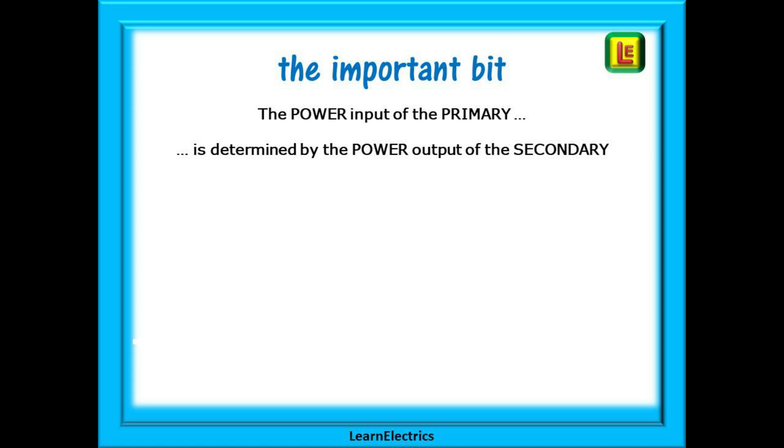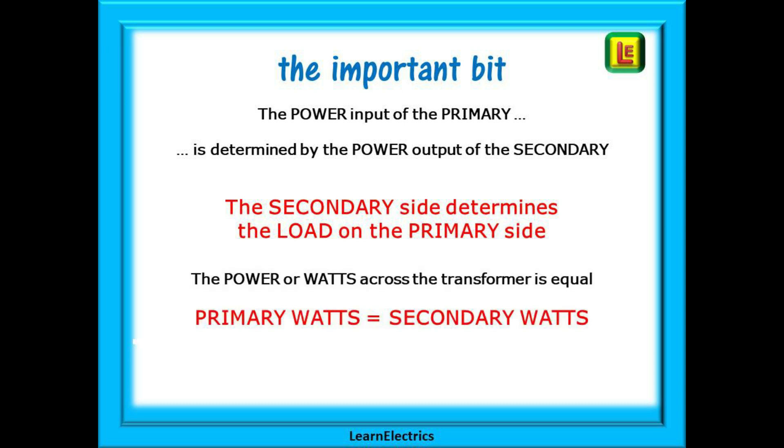Now, this is the important bit, and it will help if you can remember this. The power input of the primary is determined by the power output of the secondary. The secondary side determines the load on the primary side, so what happens last influences what happens first. The power or watts across the transformer is always equal. The primary or input watts is always equal to the demanded watts on the secondary side, and over the next few minutes we will show you this.